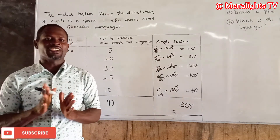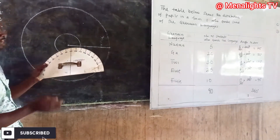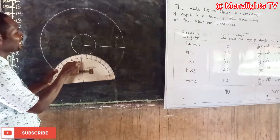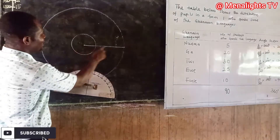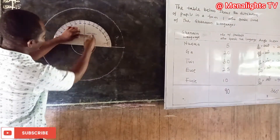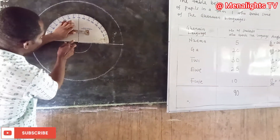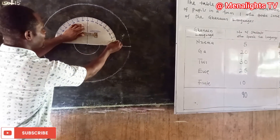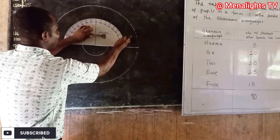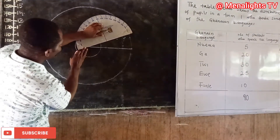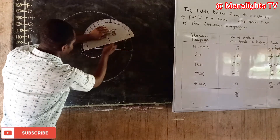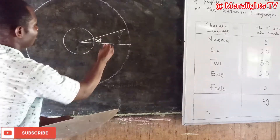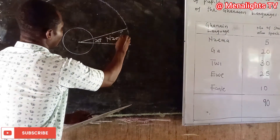On the protractor, we have the center line and the baseline. The center line must be at the center of the circle and the baseline on the drawn line. The first angle is 20 degrees for Nzima, so we start counting from 0 — 0, 10, 20 — and mark our 20 degrees, then draw the line.